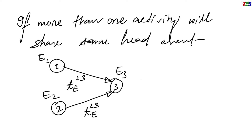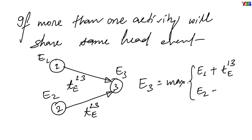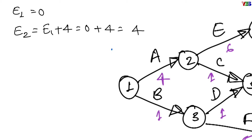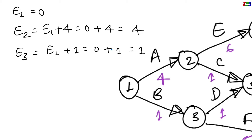That means if more than one activity shares the same head event, calculate earliest possible time at the head event by considering it for each individual activity and the maximum one will be the correct value. Now let us move to our network diagram. The very first step is to compute the earliest possible time at the first event, which will be 0 since there is no activity before it and it is independently free to start. For event 2, since it is the head event of activity A with expected activity completion time of 4 hours, E2 = E1 + 4 = 0 + 4 = 4 hours. Similarly, at event 3 which is the head event of activity B, E3 = E1 + 1 = 0 + 1 = 1.